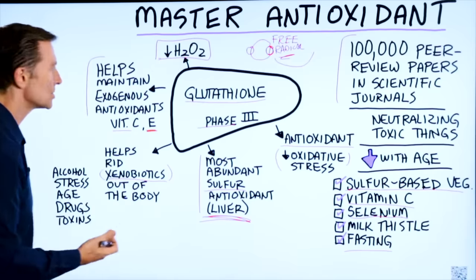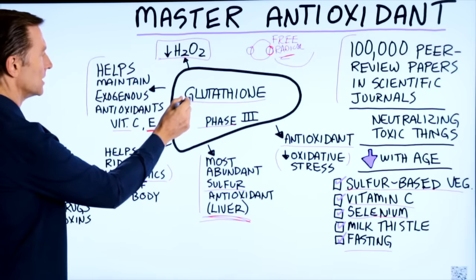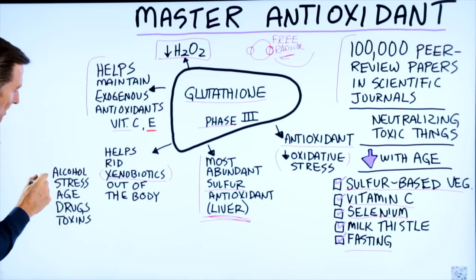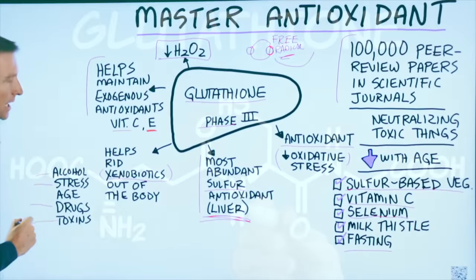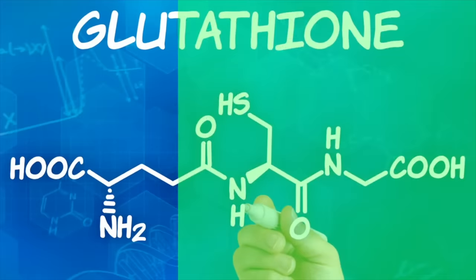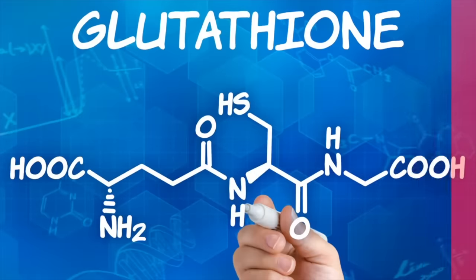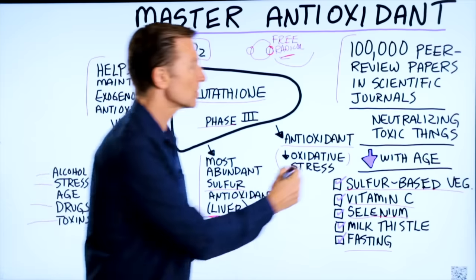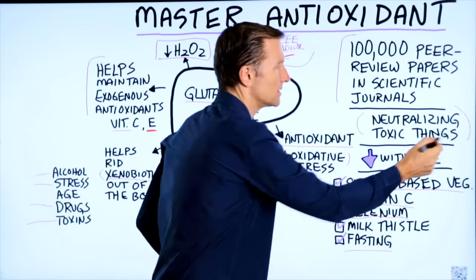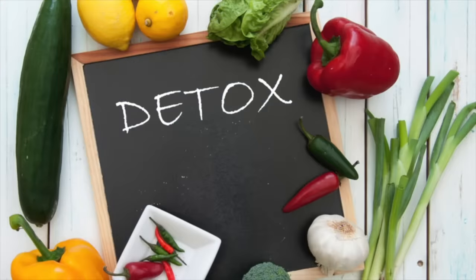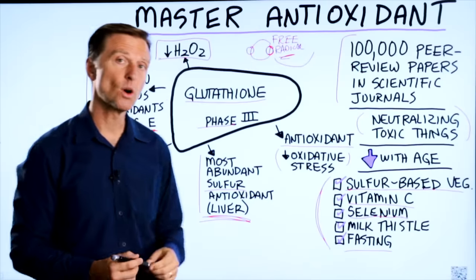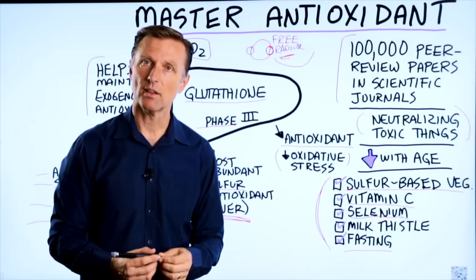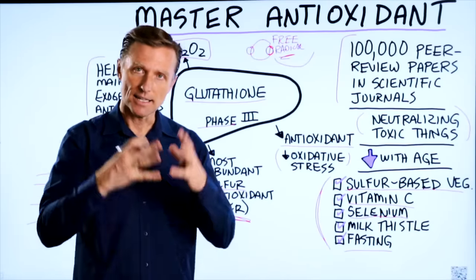With age, we decrease our ability to make glutathione. Drinking too much alcohol, stress, taking drugs and toxins — over time, these decrease glutathione. A lot of times people neglect the antioxidant networks, but they're very important at neutralizing toxic things and are also involved in detoxification. These are a few things you can do to make sure you don't run out of glutathione and your other antioxidant networks.